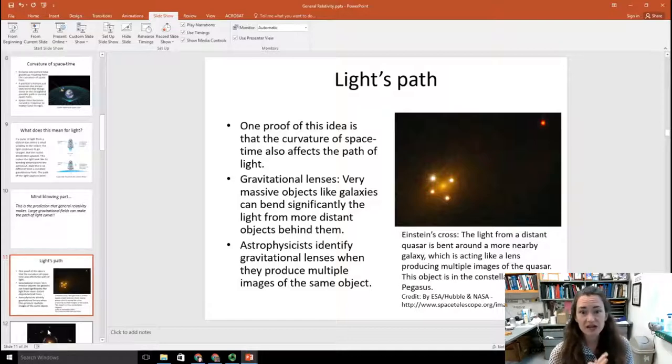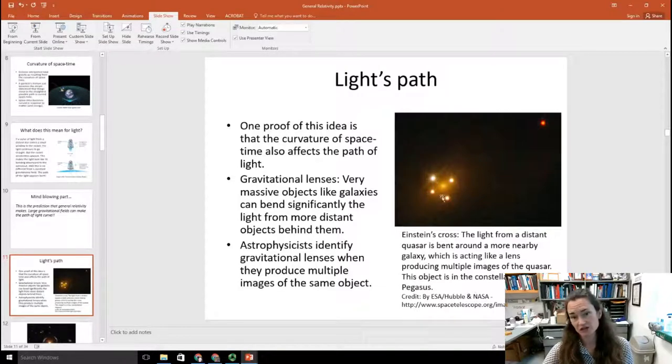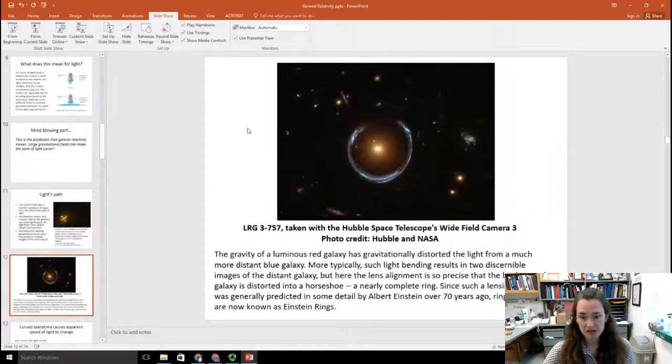Well, astrophysicists can identify gravitational lenses when they look at images from distant objects. It happens when multiple images of the same object are produced. One famous example of this is Einstein's cross. The image is shown here. And the light from a distant quasar in Einstein's cross is being bent around a more nearby galaxy, which is acting as a lens producing multiple images of the quasar. And this object is actually in the constellation Pegasus. This is a Hubble Space Telescope image of it. You can see that it looks like there's four objects when really there's just the one.